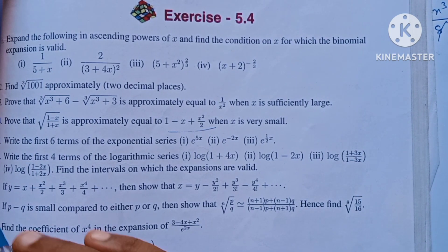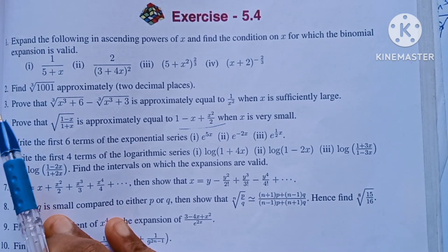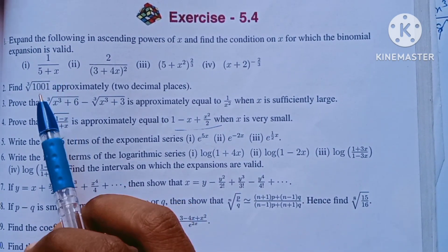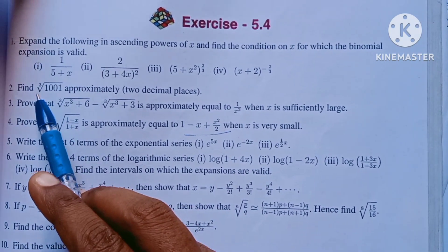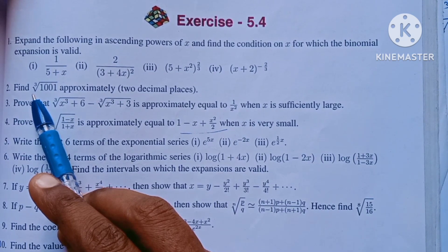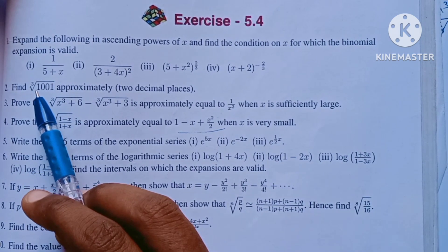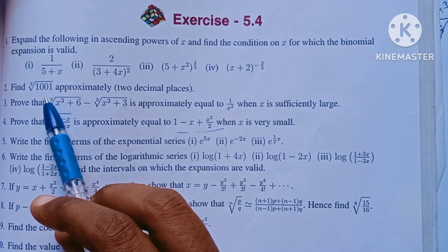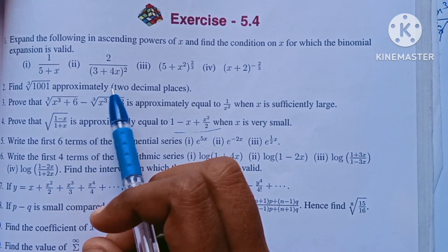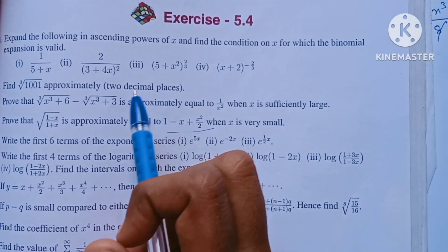Hi students, I am Beeno. 11th Mark Chapter 5, Exercise 5.4, 2nd question: Find the cube root of 1001 approximately to 2 decimal places.